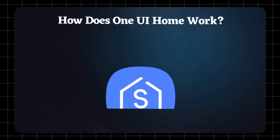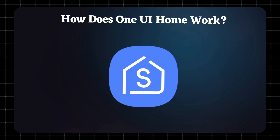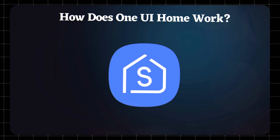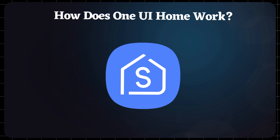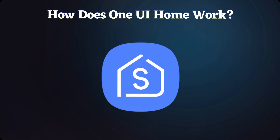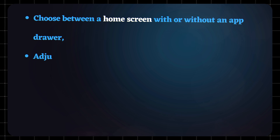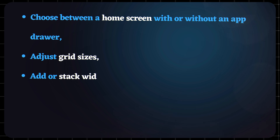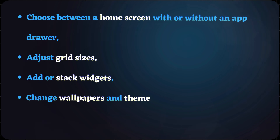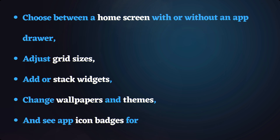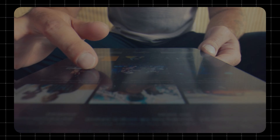How does One UI Home work? Every time you unlock your phone, One UI Home decides how apps are arranged, how widgets are displayed, and how gestures work. It lets you choose between a home screen with or without an app drawer, adjust grid sizes, add or stack widgets, change wallpapers and themes, and see app icon badges for notifications. It runs quietly in the background because it's a system app, and it's designed to work seamlessly with Samsung's One UI software.